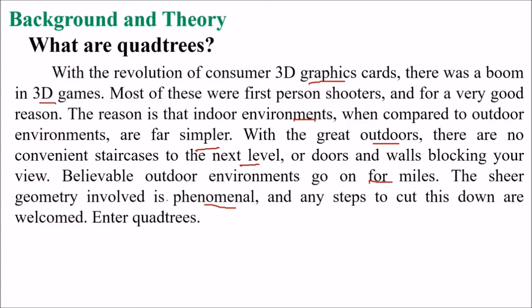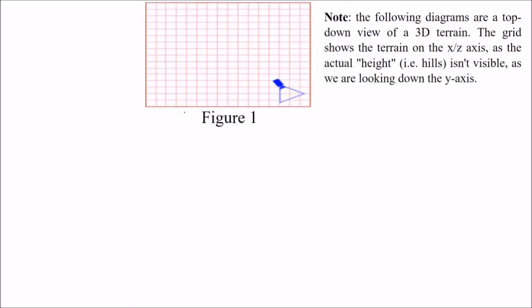How can we do that? Enter quad trees. This diagram is a top-down view of a 3D terrain. The grid shows the terrain on the x-z axis — the actual height, that is, hills, aren't visible as we are looking down the y-axis.